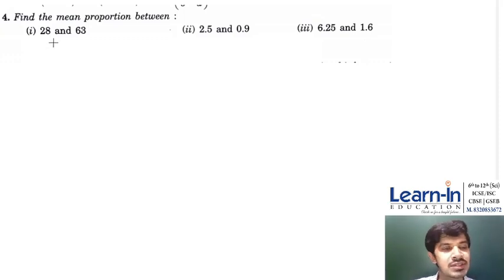Let's start with question number 4. It says find the mean proportion. The third proportion is modified.